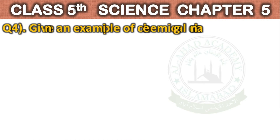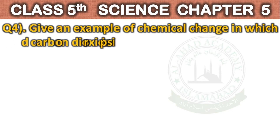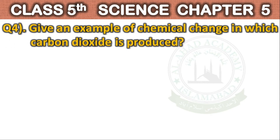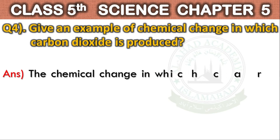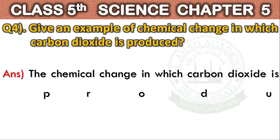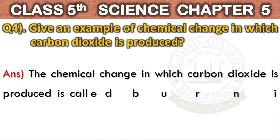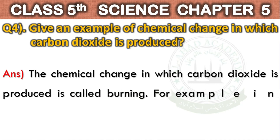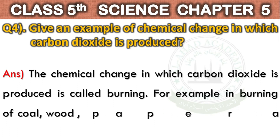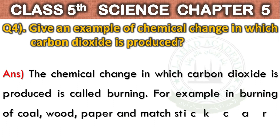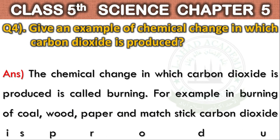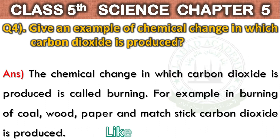Question No. 4: Give an example of chemical change in which carbon dioxide is produced. The chemical change in which carbon dioxide is produced is called burning. For example, in burning of coal, wood, and paper, carbon dioxide is produced.